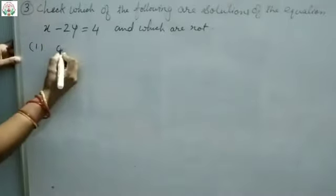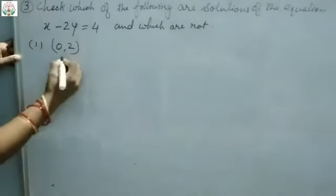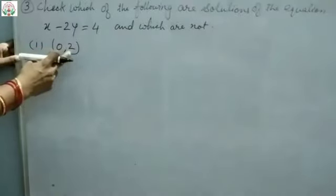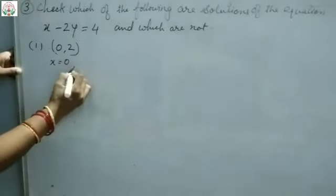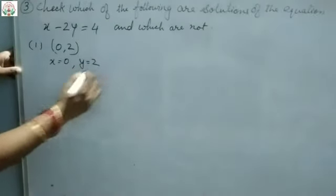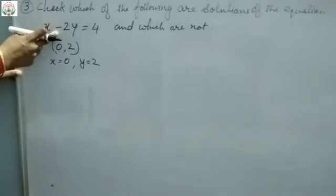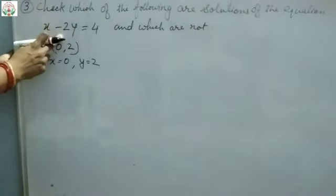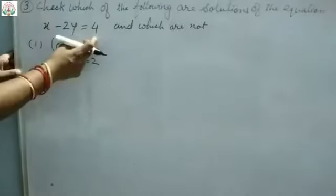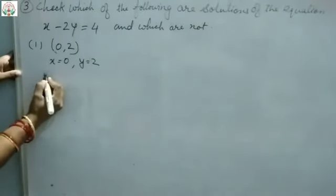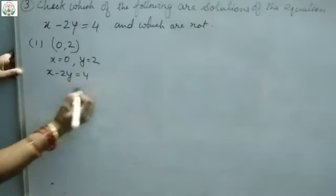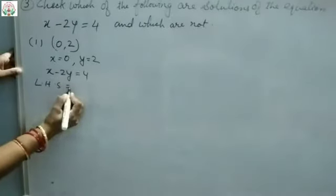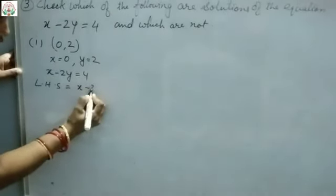Now let us see the first part. The point is (0, 2). That means the first value is x and the second value is y, so x equals 0 and y equals 2. Now we will put these values into the linear equation and check whether the left-hand side equals the right-hand side. Our linear equation is x minus 2y equals 4. So LHS equals x minus 2y.